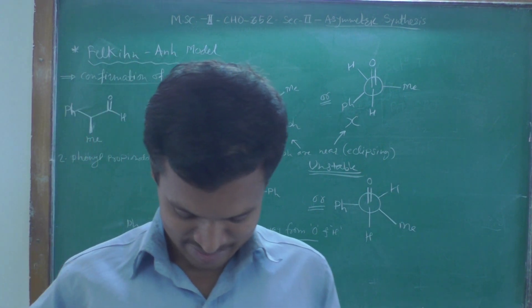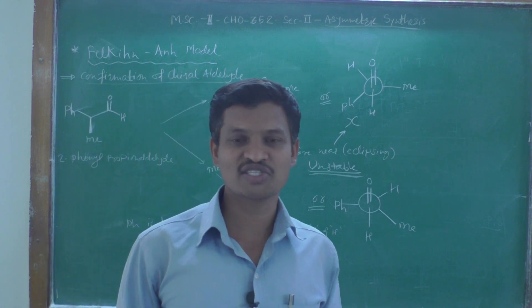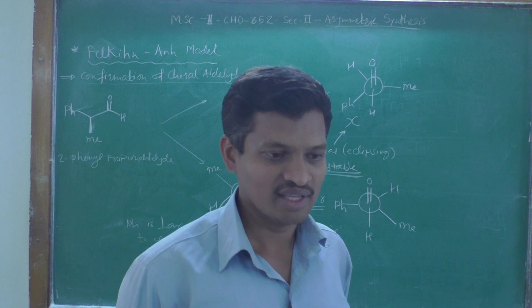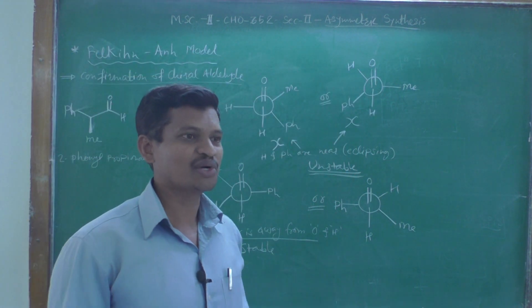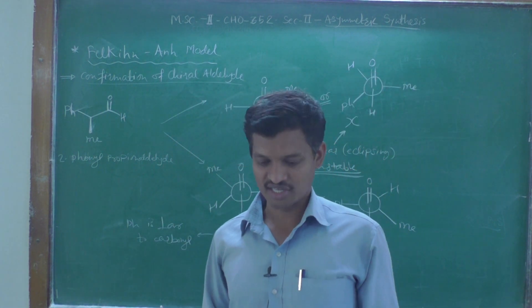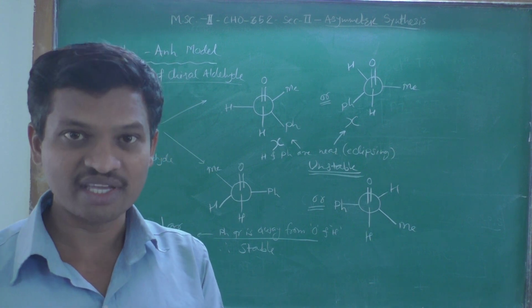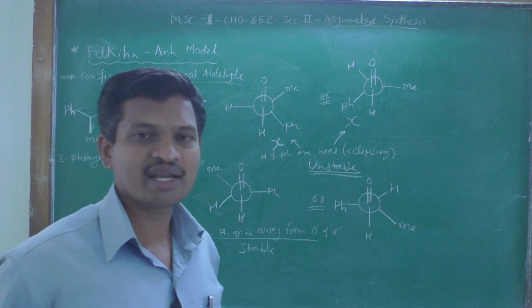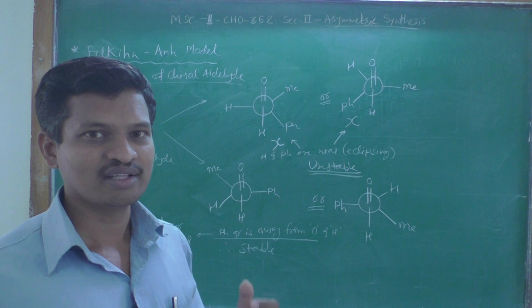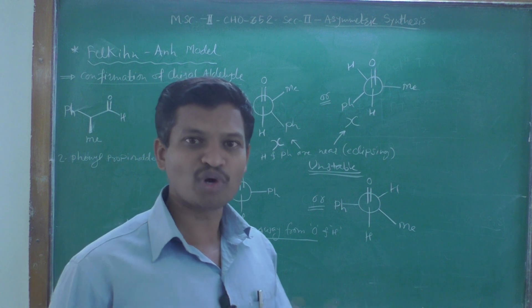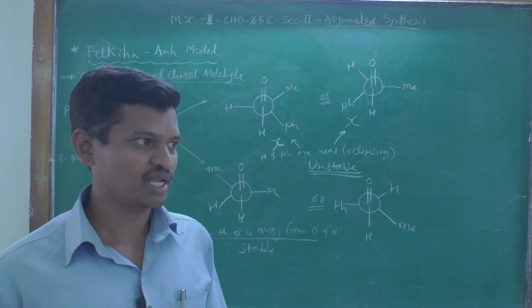Hello, good morning, dear friends. Welcome back to the video lecture series. We are discussing the asymmetric synthesis topic. In the last video we covered diastereoselectivity in asymmetric aldol reactions — the basic introductory part. Today we are going to see the next model which explains diastereoselectivity, which is the Felkin-Anh model. There are a number of theories put forth by different groups of scientists, and out of these, the first one is the Felkin-Anh model, and the next one is Cram's rule.